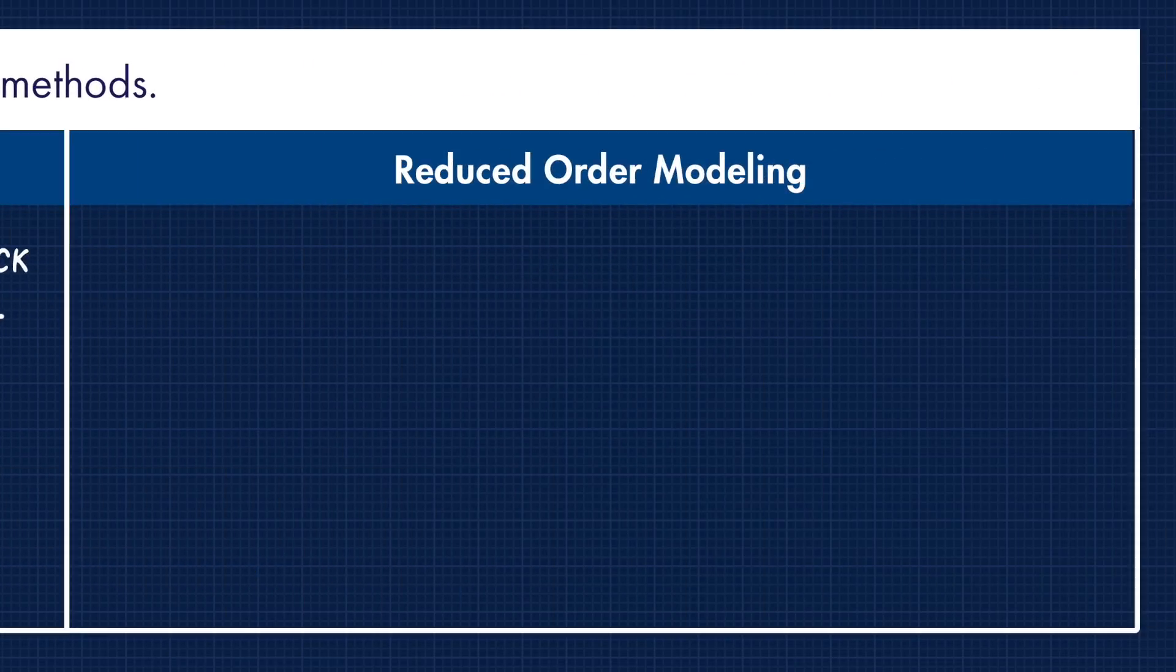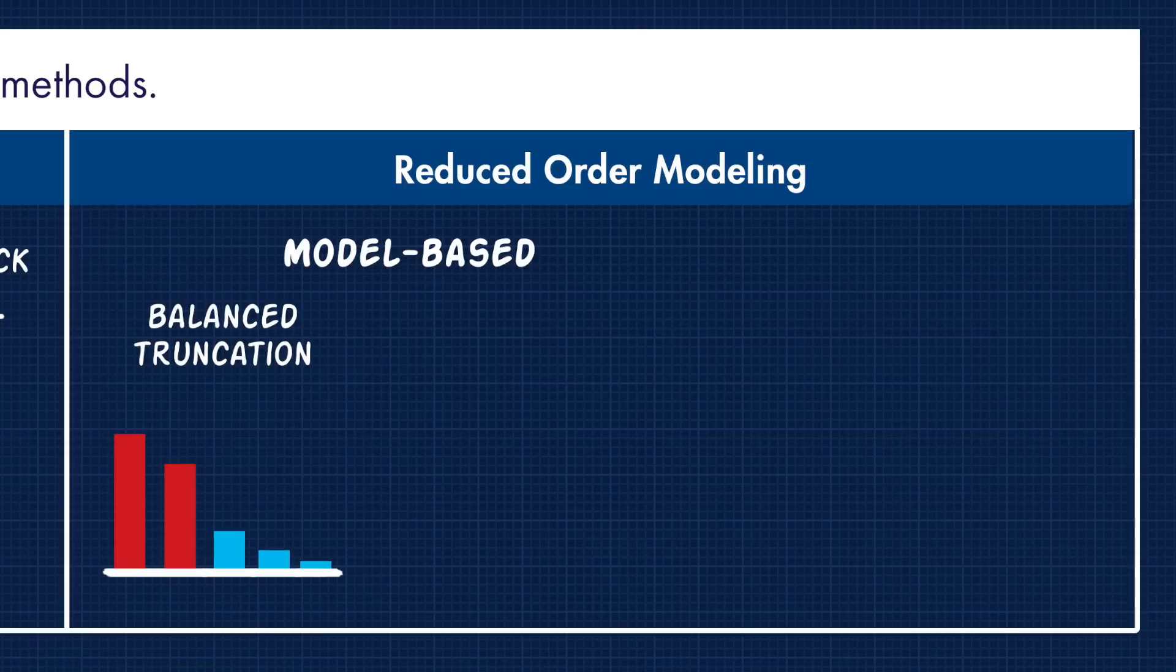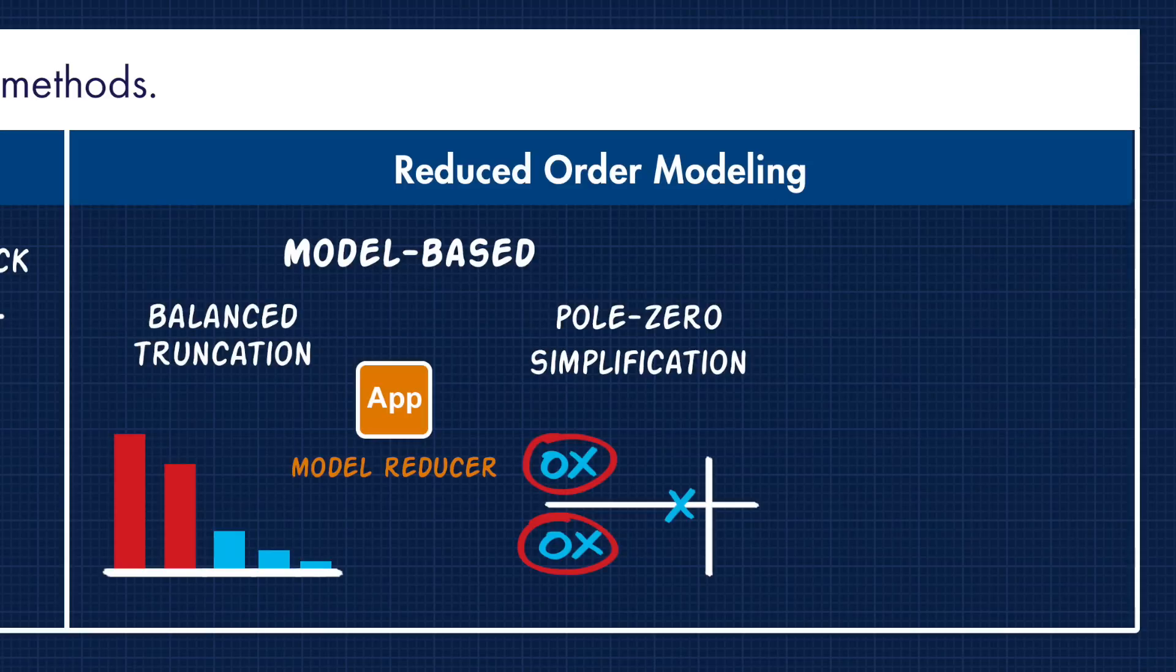Finally, you may have a high fidelity model that accurately captures the hardware behavior, but it might not be suitable for different stages of the development cycle, such as for hardware in the loop testing, or for system analysis and simulation. And so you may want to reduce a model down to something more manageable while maintaining the key dynamic characteristics. You can do that through model-based applications like balanced truncation and pole zero simplification, both of which are available within the model reducer app.